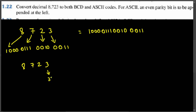So the ASCII codes are: for 8 it's 38, for 7 it's 37, for 2 it's 32, and for 3 it's 33. These are the ASCII code representations of 8723. Now we need to write each of these numbers in seven bits, because ASCII codes are seven bits.